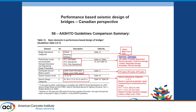Your fundamental period is either 0.5 seconds or less, in which case we use S(0.2), adjusted from site category C to whatever you're in. And for periods larger than 0.5, then we use S(1.0). This gets related to bridge importance category.